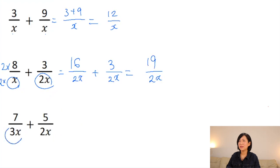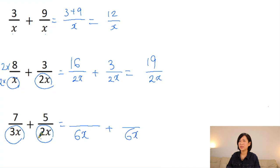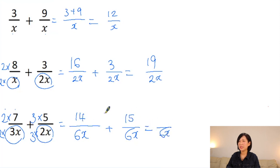Again, different denominators — let's find the common denominator, which is 6x. To make 3x become 6x, multiply by 2, and do the same on top. 2x × 3 = 6x, so 2 × 7 = 14 and 3 × 5 = 15. All you need to do is add the numerators: 14 + 15 = 29. That's all.